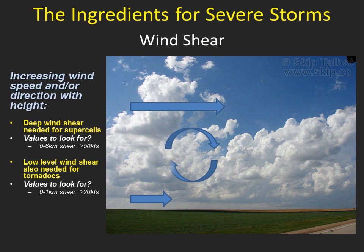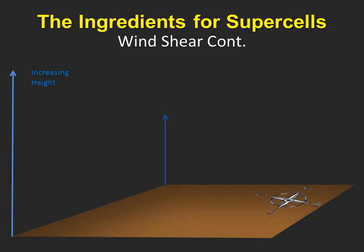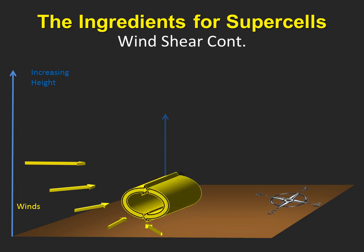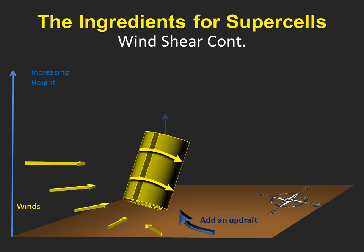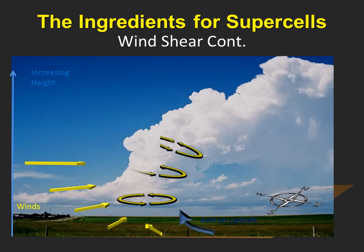This rotation is vital for the development of severe supercellular thunderstorms. Now let's take this a step further. What if we add a directional component to our shear profile? So we not only have winds increasing in speed with height, we also have a change in direction. Our surface winds start out from the southeast, and as we move up in the atmosphere, our winds veer, or turn clockwise, with height. As in the previous example, we still have a rotational component in the horizontal. Now if we add an updraft, we begin to tilt this rotation into the vertical — a critical component to the development of supercellular thunderstorms.